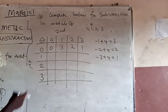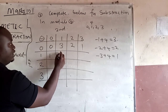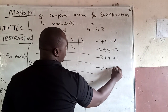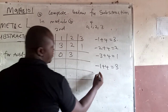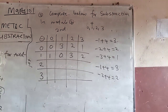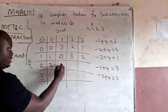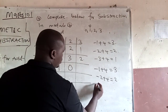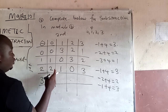1 minus 0 gives us 1. 1 minus 1 is 0. 1 minus 2 gives minus 1, plus 4 is 3. 1 minus 3 is minus 2, plus 4 gives 2. 2 minus 0 gives 2. 2 minus 1 gives 1. 2 minus 2 gives 0. But 2 minus 3 is minus 1, so minus 1 plus 4 equals 3.